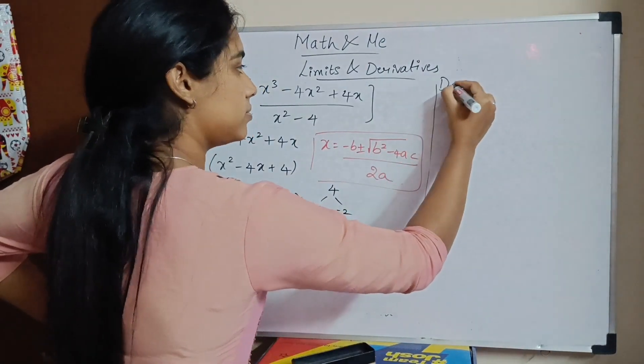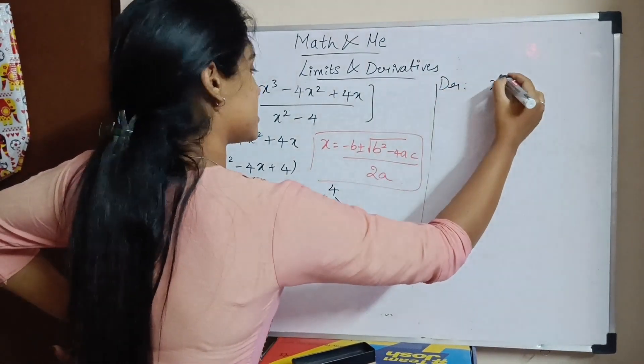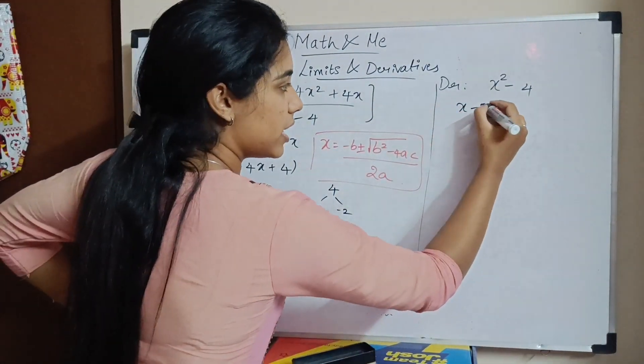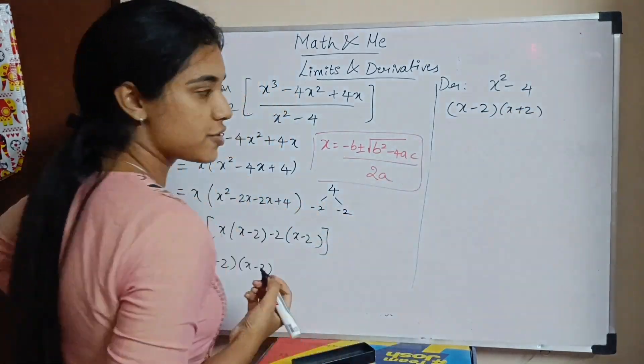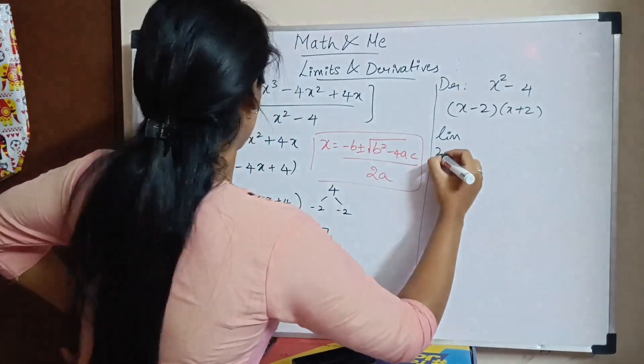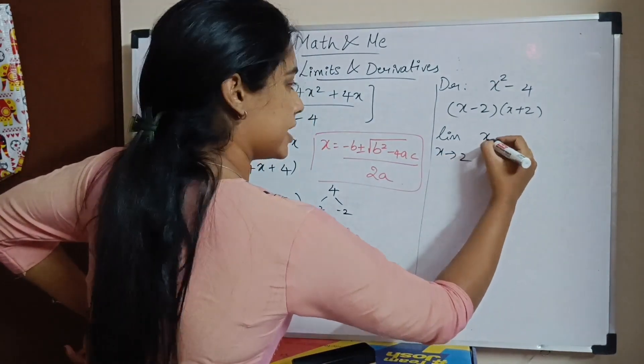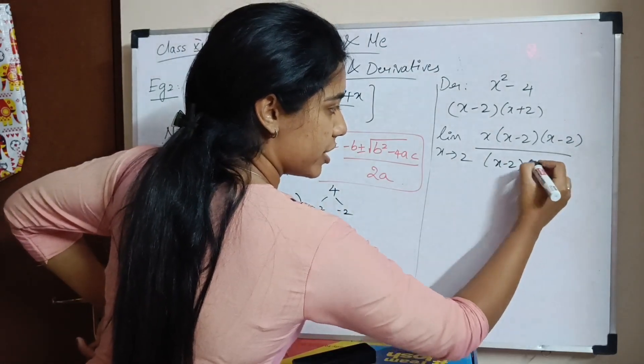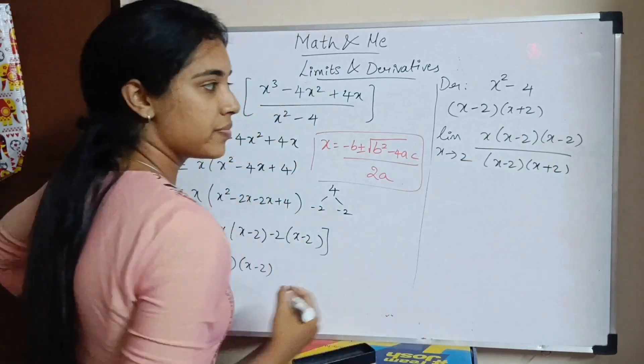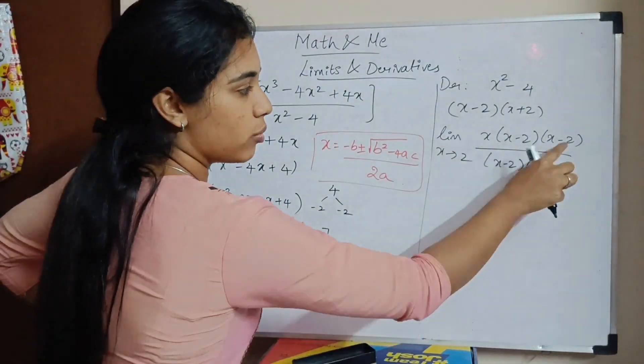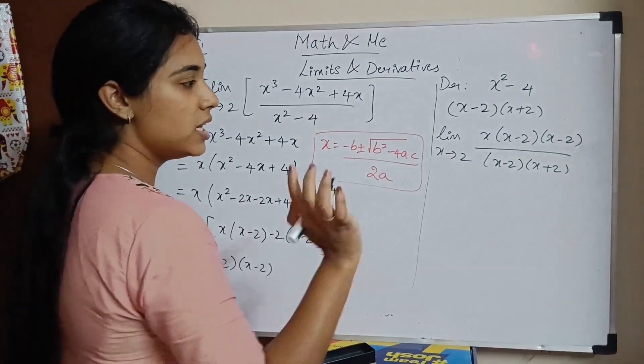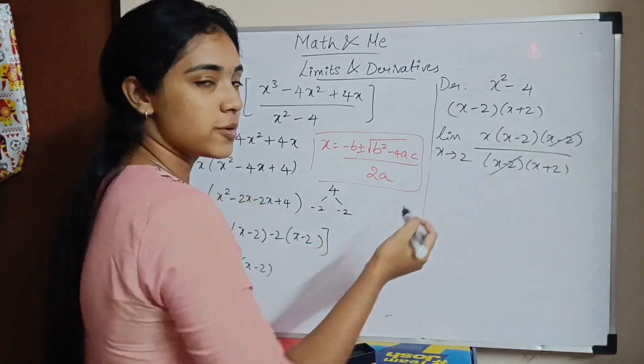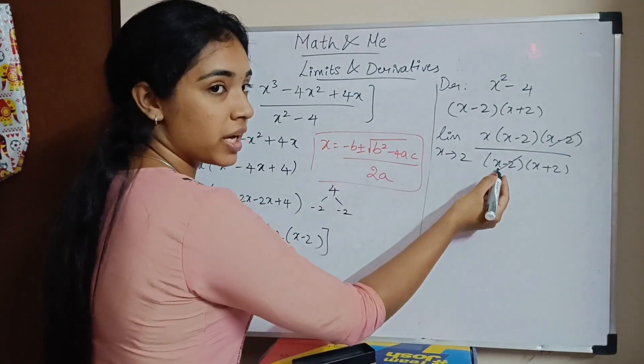Now what is your denominator? Denominator is x square minus 4. a square minus b square formula. You can write 4 as 2 square. What will it be? x minus 2 into x plus 2. So what does your sum become? Limit x tends to 2. Numerator x into x minus 2 into x minus 2 divided by x minus 2 into x plus 2. Do not mess up with the sign. Sign is very important. Minus or plus, be correct. You are going to get x minus 2 and x minus 2 gets cancelled. Basically x minus 2 was causing the 0. Now substitute 2.